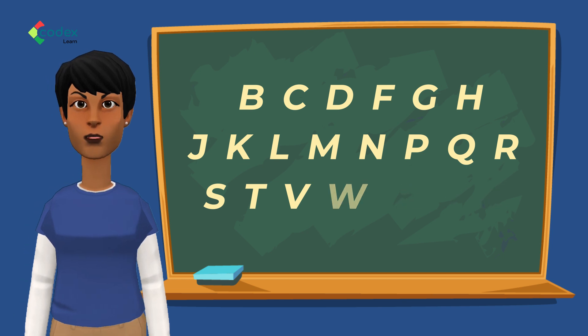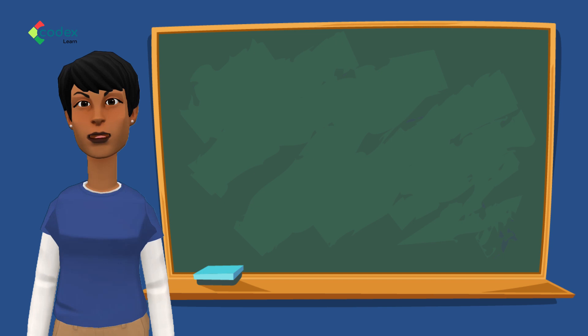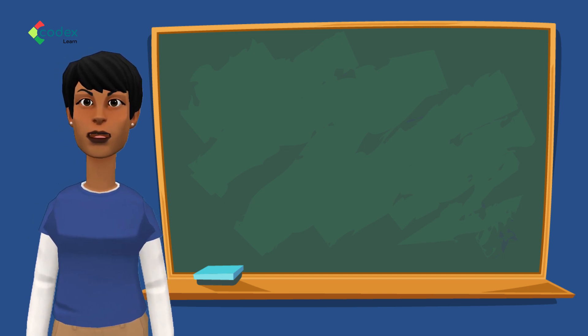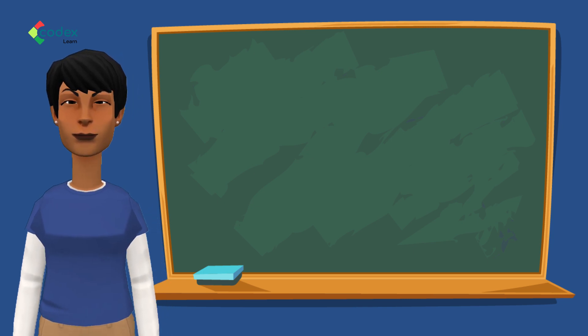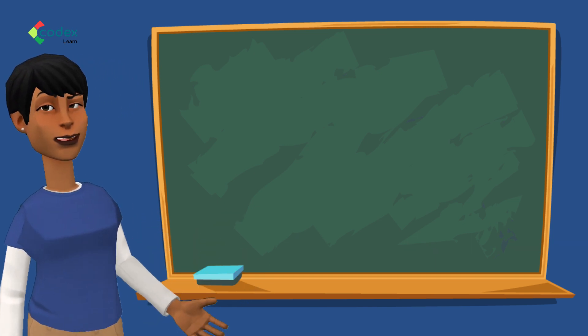Now, there's one more interesting thing we need to know about consonants. Each consonant has its own sound. Yes, that's right. All 21 consonants of the alphabet have a unique sound. In today's class, we'll focus on the sound of four of these consonants.